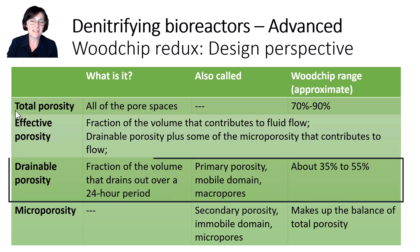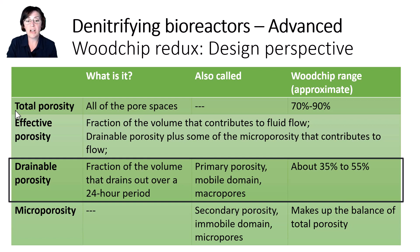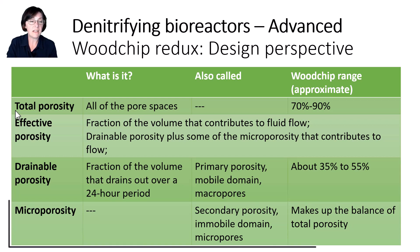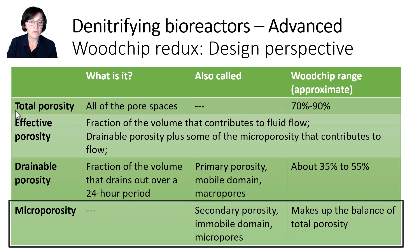Drainable porosity is the one I would highlight the most if I had to pick. We can measure it in the lab, so it's really what we use for design purposes. Values range from about 35 to about 55 percent or maybe a little more for most woodchips. Finally, micropores are often called secondary porosity and make up the balance of the total porosity.